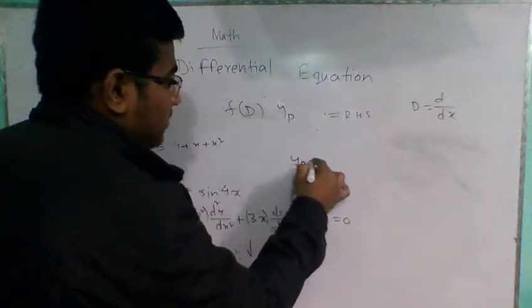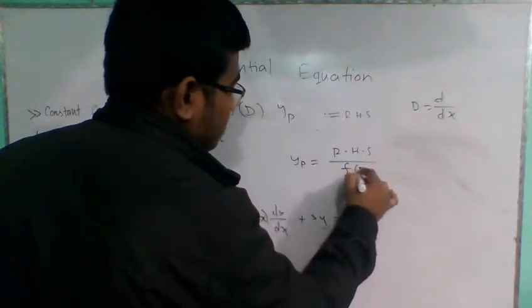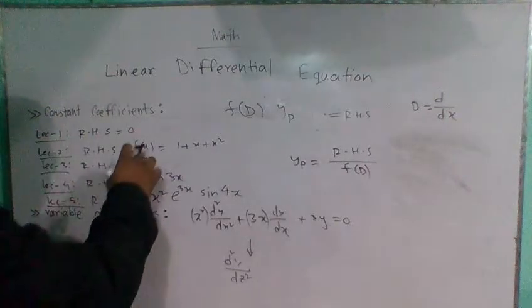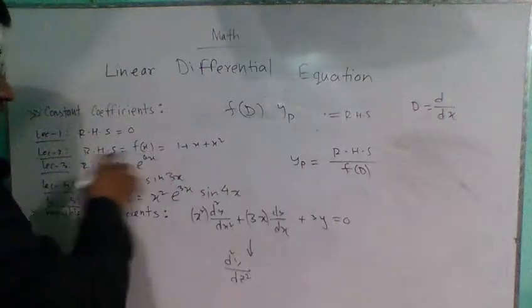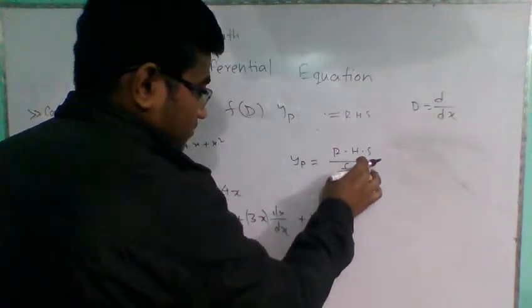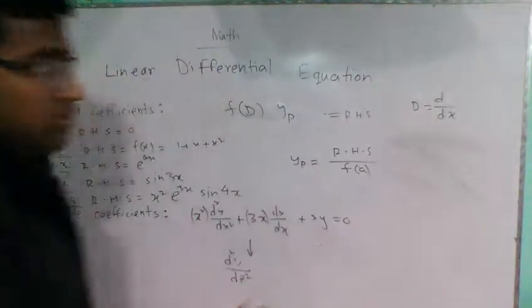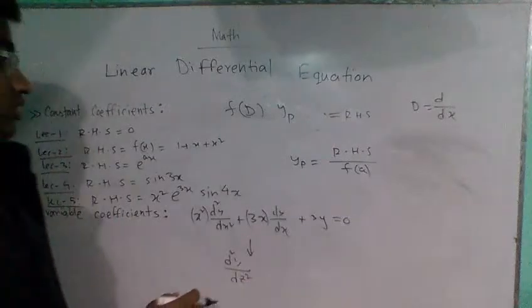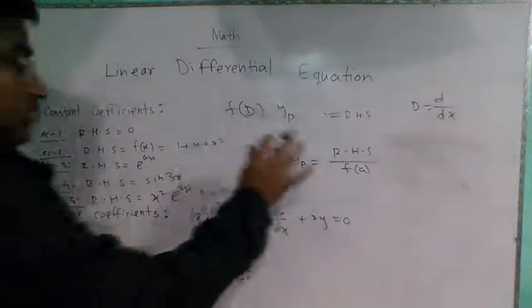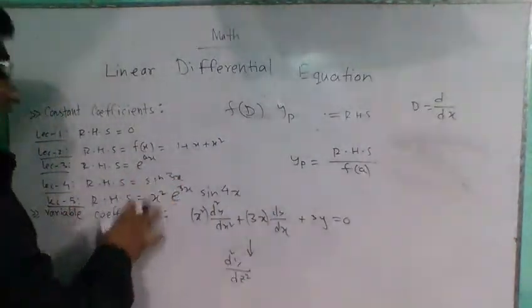The particular solution is: y equals 1 over f(D) times the right-hand side. We need to know the complementary function and the particular integral. The general solution equals the complementary function plus the particular integral. When the right-hand side is not 0, we solve for both. We will know how to find these from basic problems, for example with sin x.